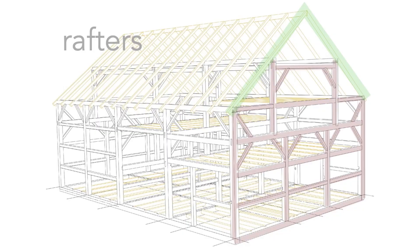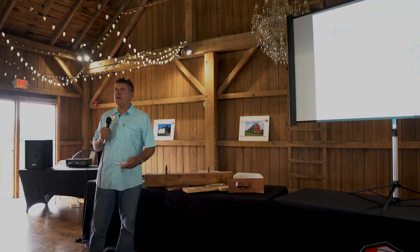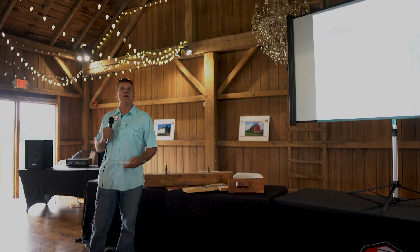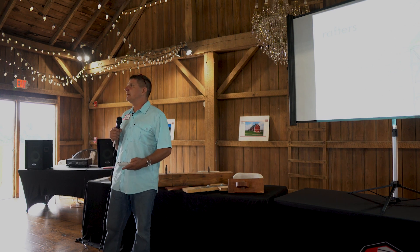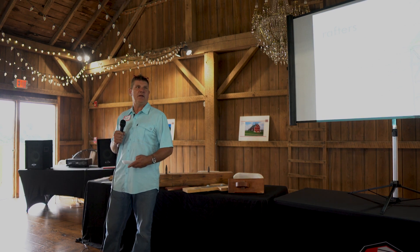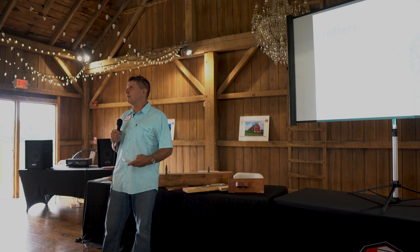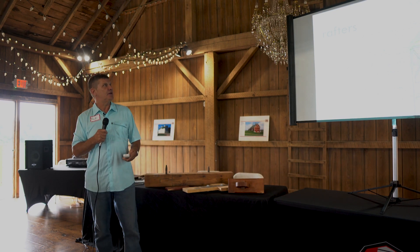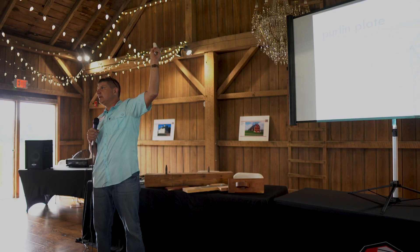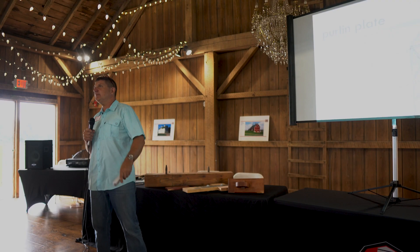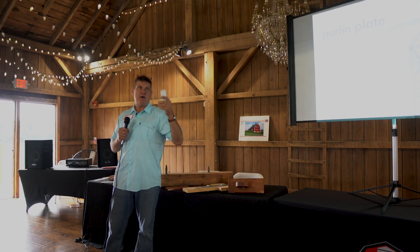We have rafters, which are probably fairly obvious to folks, although I've had people call and say 'my joists in the ceiling are bad' when what they're really trying to say is their rafters are bad. It's really hard to have a conversation if we can't talk together in the same language about what's wrong with the building. So we have rafters, we have purlin plates — these pieces at the top that run the length of the building.